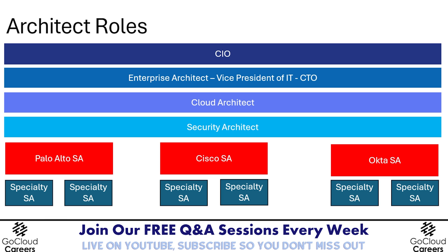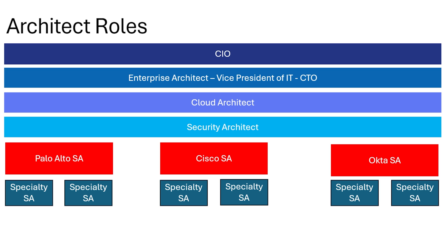Underneath the CIO, you'll find an Enterprise Architect or Chief Technology Officer — the Chief Strategist reporting into the CIO, advising on architectural approaches across people, processes, and technology to optimize the business. One step beneath that is the modern Cloud Architect — a hybrid multi-cloud architect responsible for data centers, co-location facilities, and public cloud providers. This is a big, strategic position covering networking, security, compute, storage, applications, and AI.